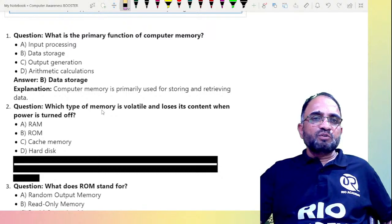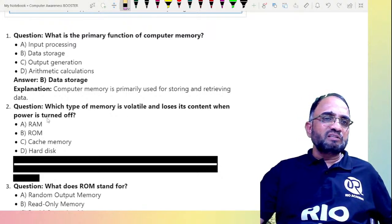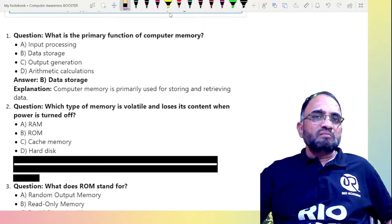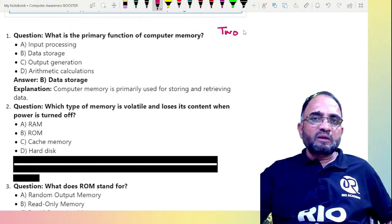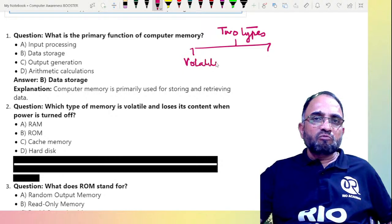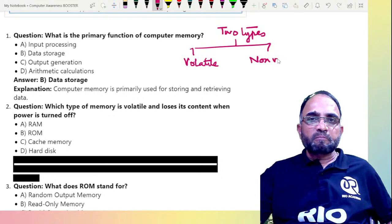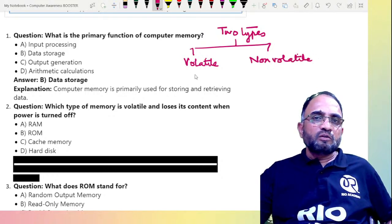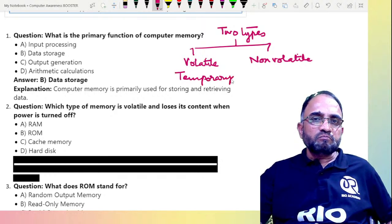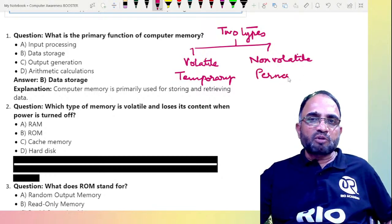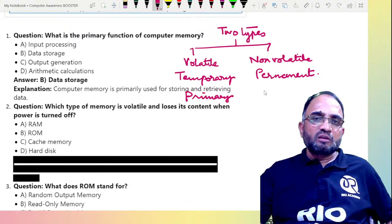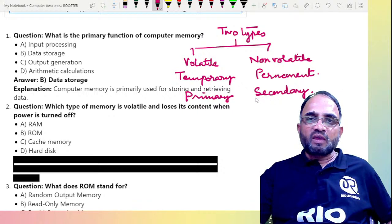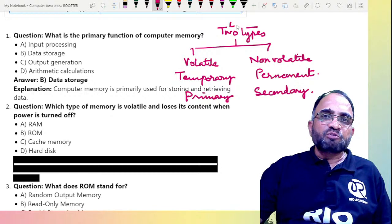The next question is: which type of memory is volatile and loses its contents when power is turned off? Now, memories are basically classified into two types: one is volatile memory and the other is non-volatile memory. Similarly, one is temporary memory and the other is permanent memory, and also primary memory and secondary memory.